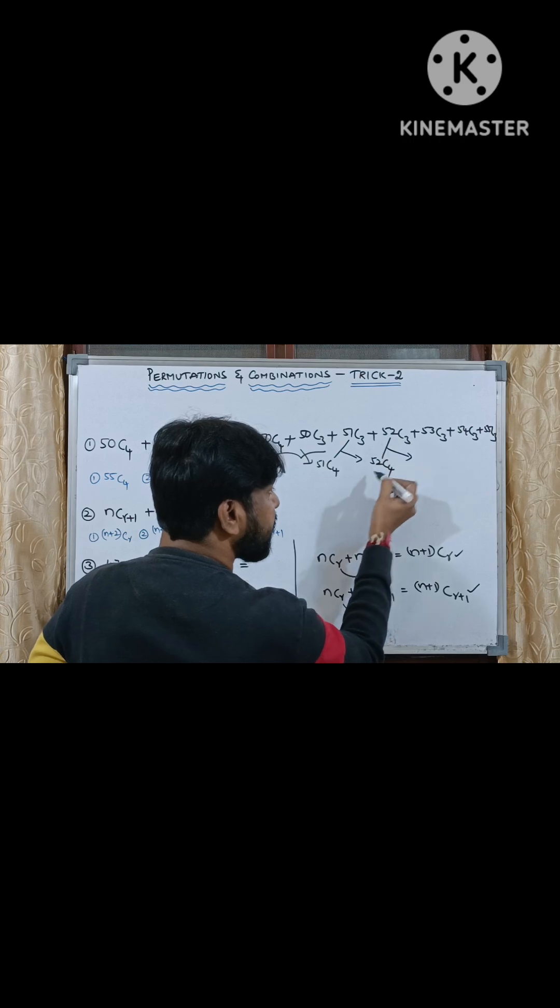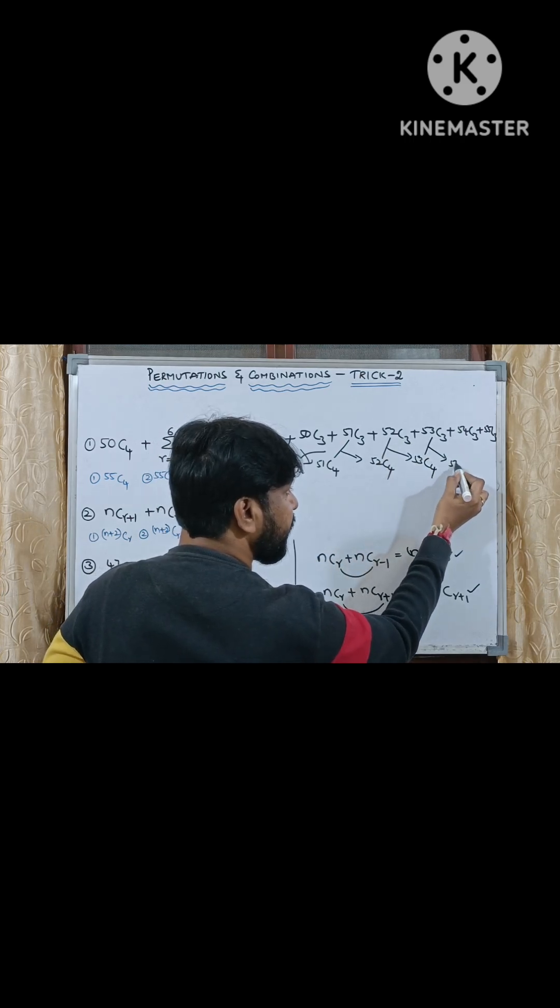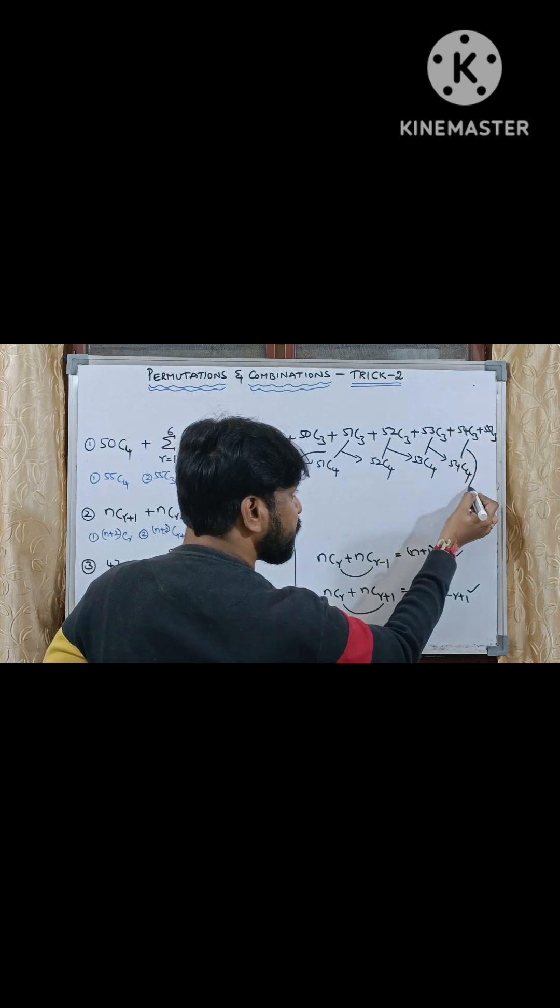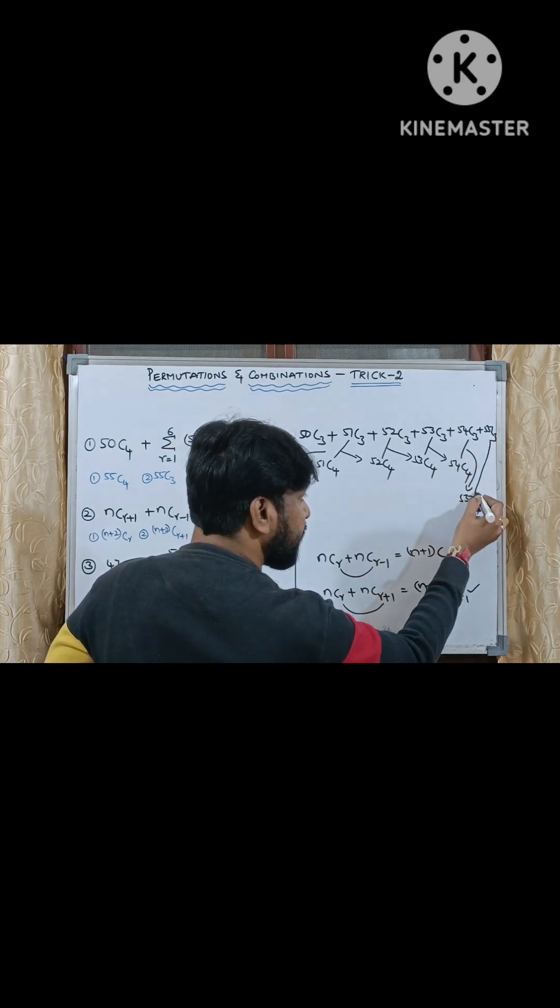Coming to these two, 52C3, 52C4 can be nothing but 53C4. Coming to these two, 53C3, 53C4 is nothing but 54C4. Coming to these two, 54C3, 54C4 can be written as 55C4. Then from these two.